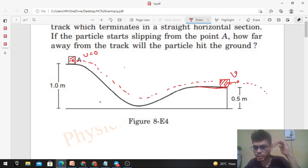The particle will move in this projectile path and hit the ground at some distance x from the end of the track. So we have to find out the value of x.